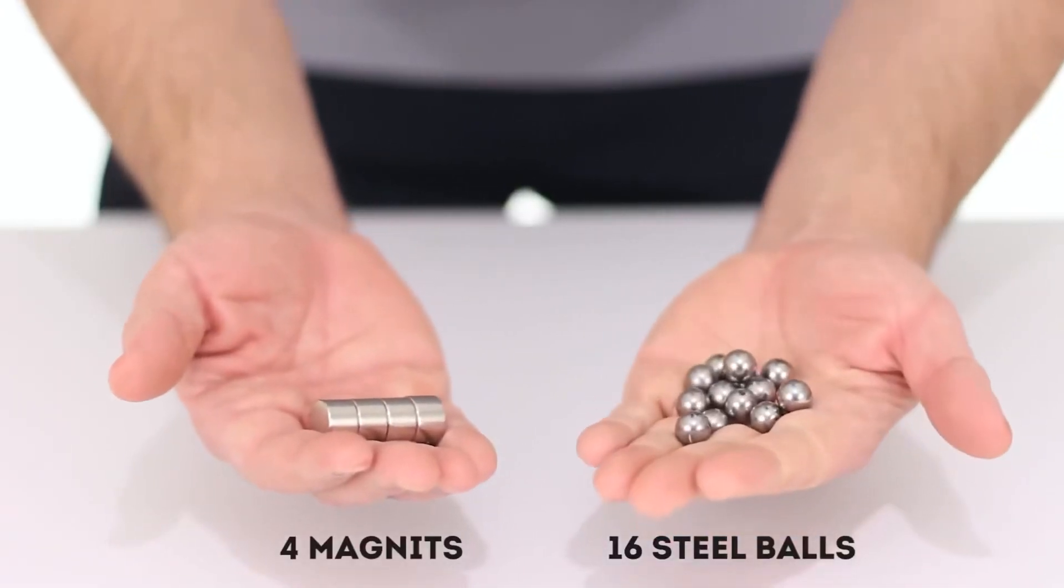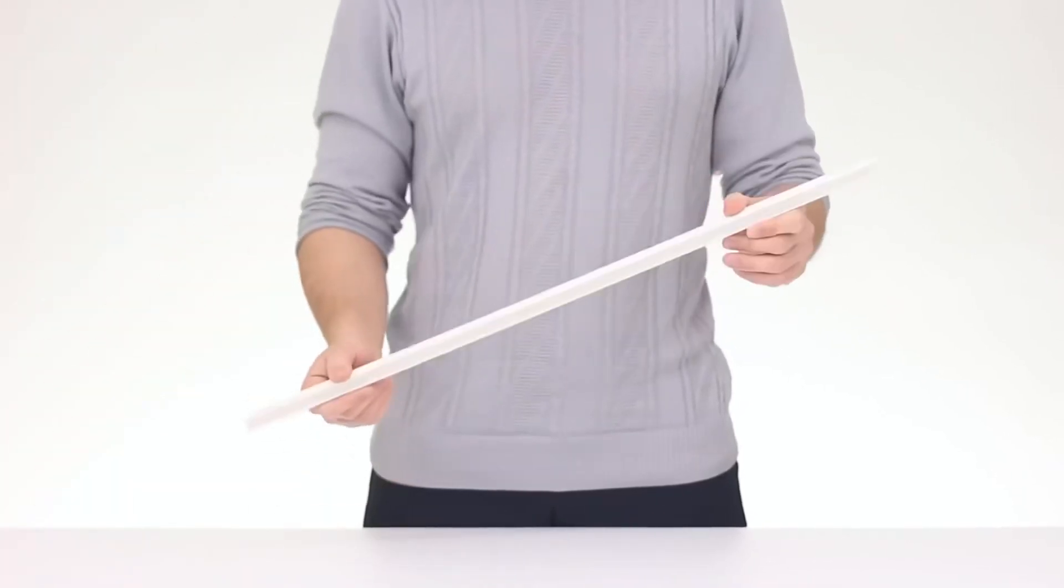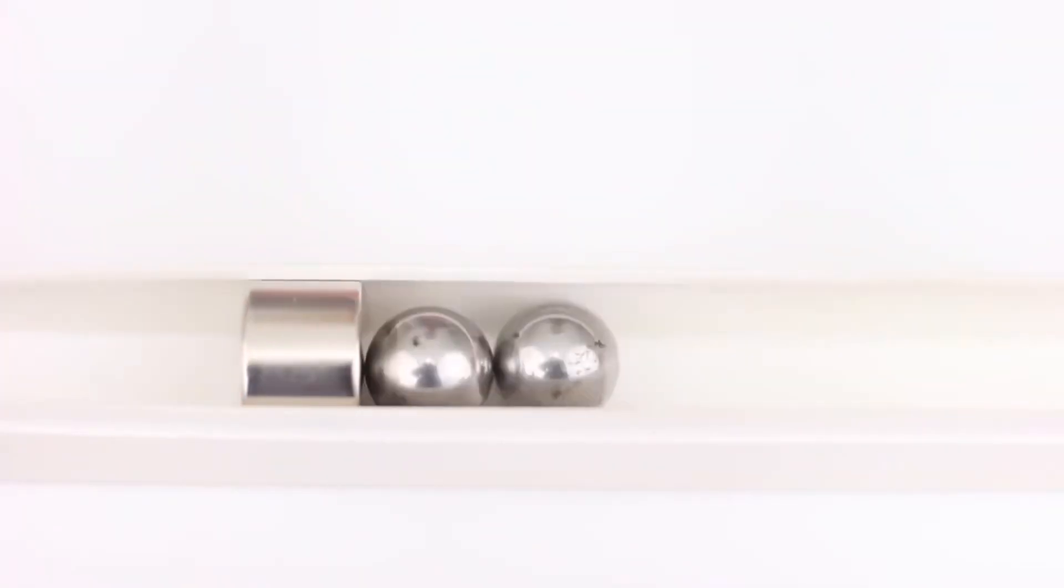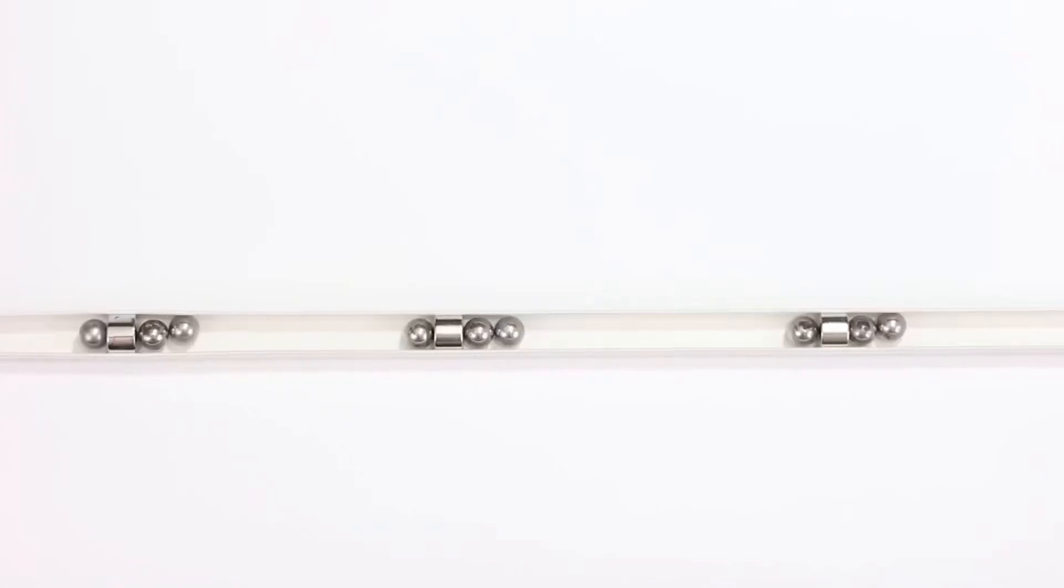Let's take four magnets and 16 steel balls. Now, we'll open up the plastic baseboard and place them inside as follows. Push a lonely ball to the nearest magnet and bam! All the balls have changed their position. And the extreme one flew out the baseboard at a decent speed. This is a real magnetic rifle.